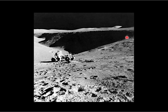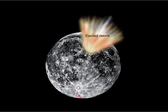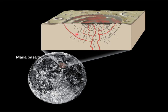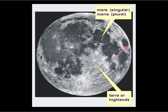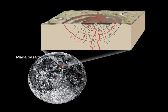Where are the volcanoes? The maria didn't form from volcanoes the way we think of them — they formed from impact, like everything on the Moon. Something really big smacked into the Moon and cracked the crust. Hundreds of millions of years ago when this happened, there was still magma beneath the surface, and it seeped up through the rock, flowed out, and filled in the giant impact crater. Like everything on the Moon, maria form from impact.